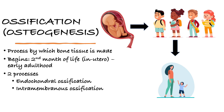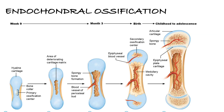So there are two processes involved: endochondral ossification, and then we have intramembranous ossification.